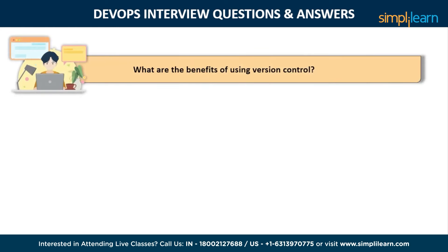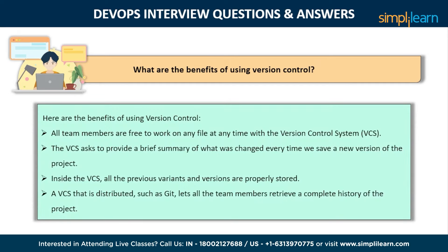The seventh question is: what are the benefits of using version control? All team members are free to work on any file at any time, and the version control system (VCS) will allow the team to integrate all modifications into a single version. The VCS asks to provide a summary of what was changed. Every time we save a new version of the project, we can examine exactly what was modified in the content of the file, and we will be able to see who made what changes. Inside the VCS, all previous variants and versions are properly stored — we can request any version at any moment and retrieve a snapshot of the entire project. A distributed VCS like Git lets all team members retrieve a complete history of the project, even if the main server goes down.